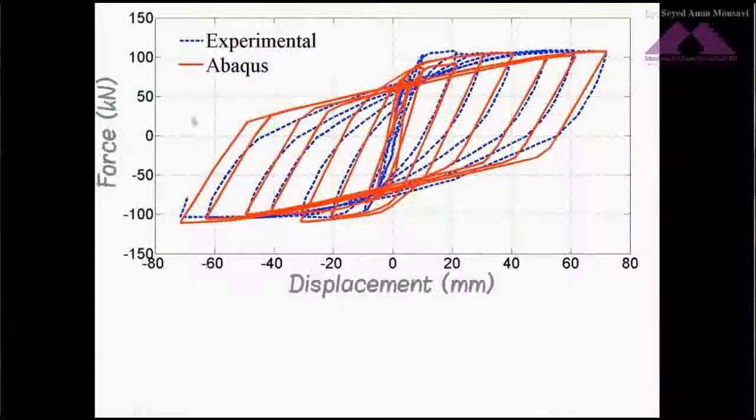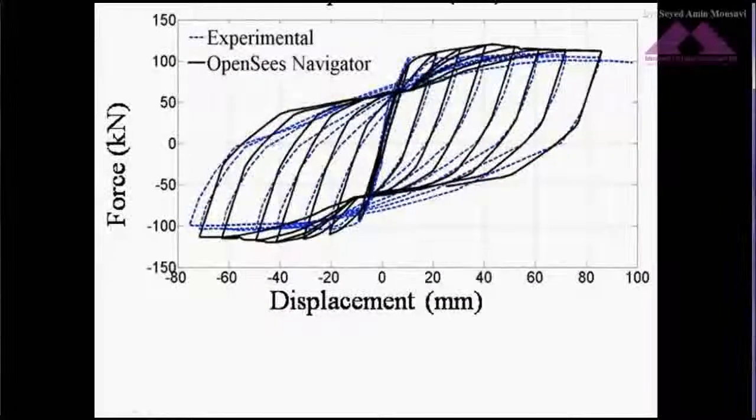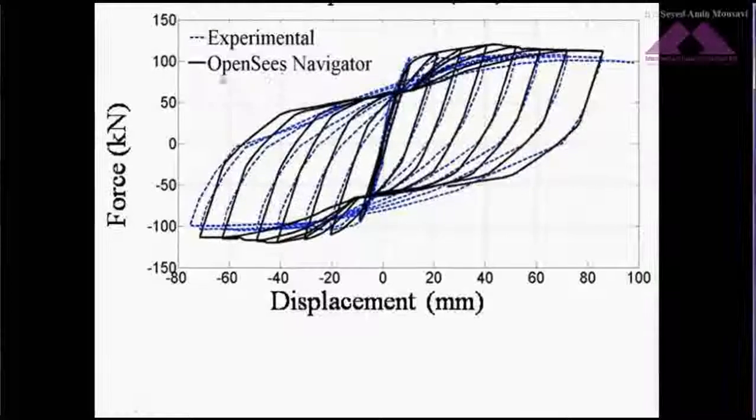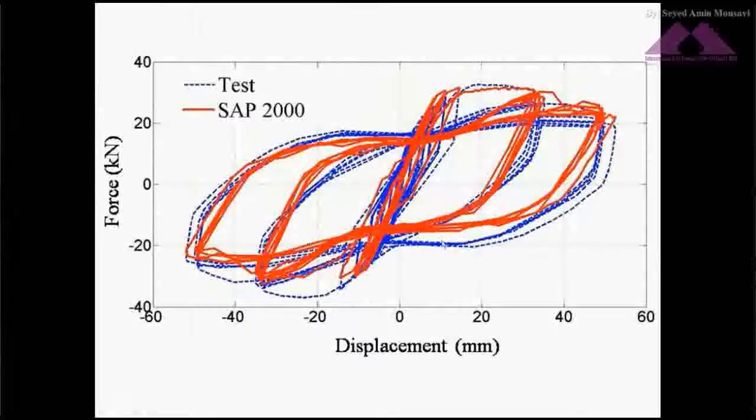For example, this is a verification on a reinforced concrete column carried out by the general purpose finite element program Abaqus. This is another verification using OpenSees, and finally, this is another verification analysis using SAP 2000.